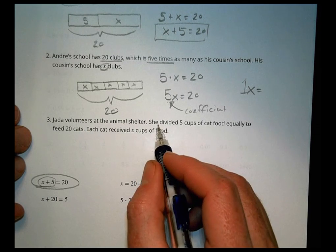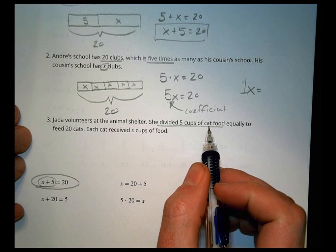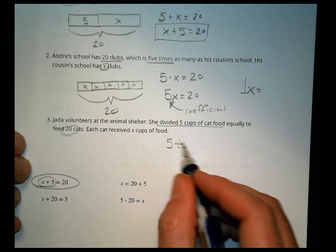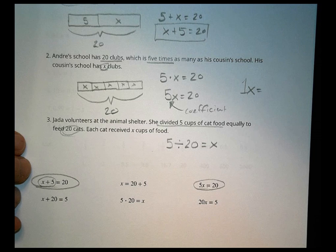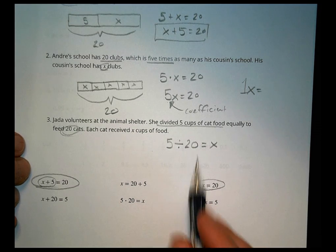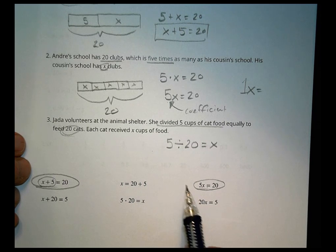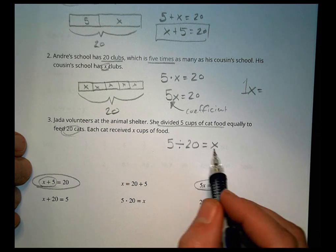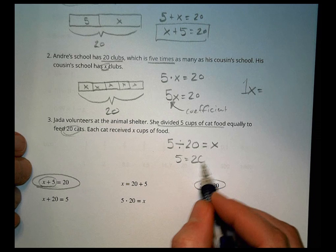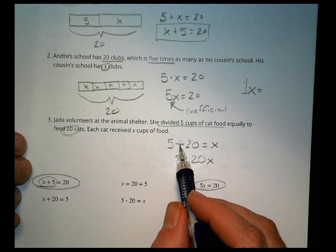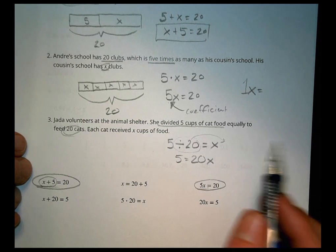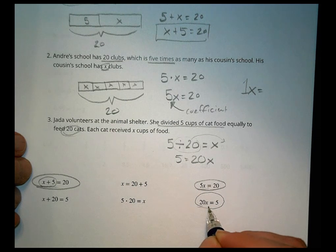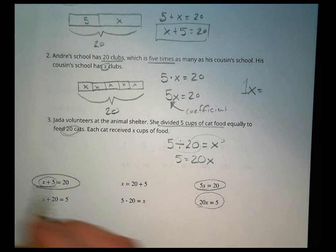Number three, Jada volunteers at the animal shelter. She divided five cups of cat food equally to feed 20 cats. So what did she do? She had five cups of cat food and she's going to divide that for 20 cats, so everybody gets x amount of food. Now, when we look over here, we don't see five divided by 20 equals x, do we? Nope. So what else could that be? Well, if I was to change the order of operations around a little bit, instead of saying five divided by 20 equals x, I could also say five equals 20 times x. Why? Because to get this divided by 20 over there, think about the opposite. So instead of dividing by 20, it's multiplied by 20 over here. So do I see that anywhere? Sure, I do. It's in this order here: 20x equals five.